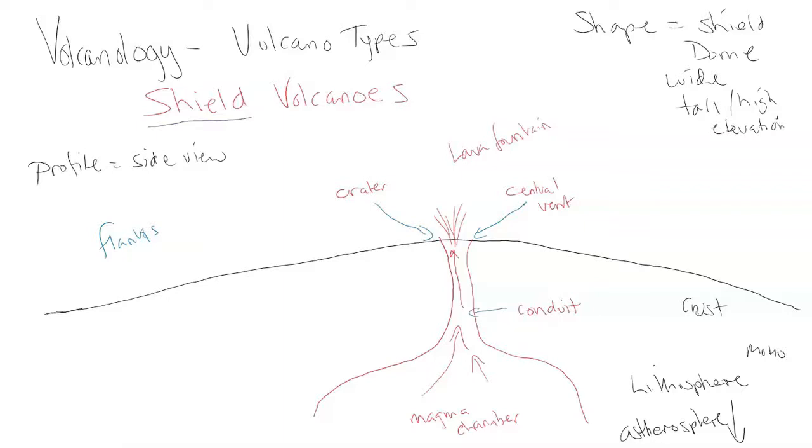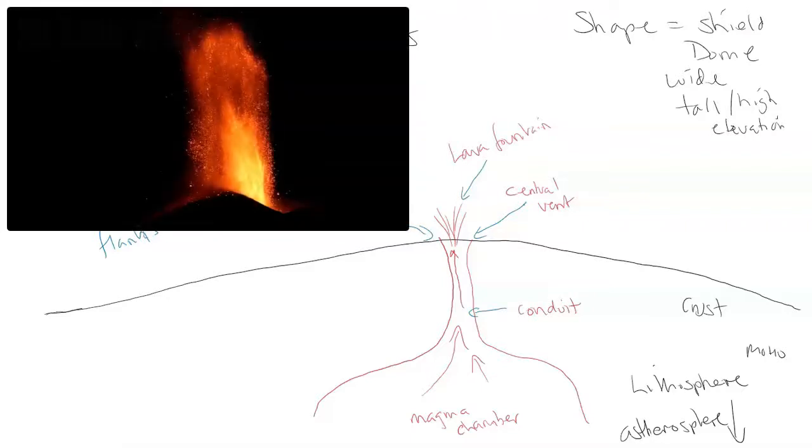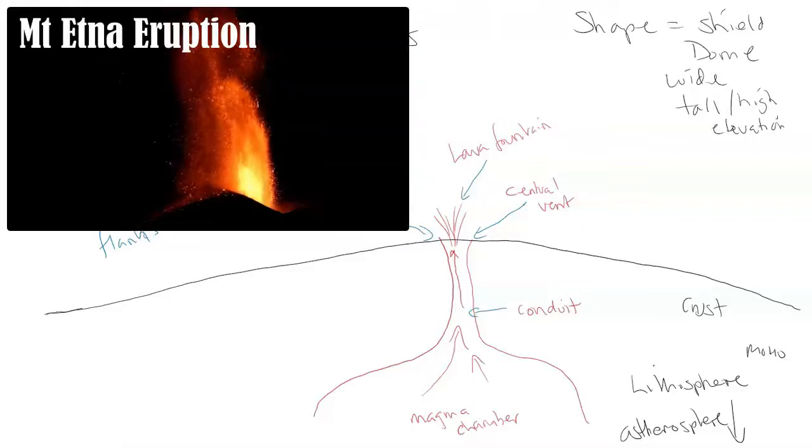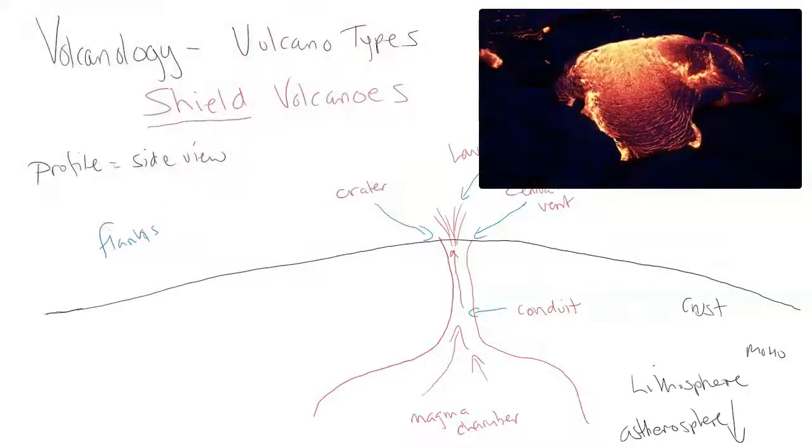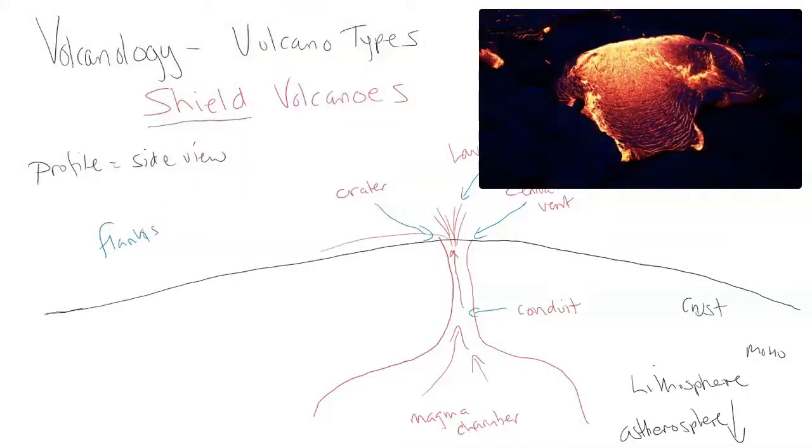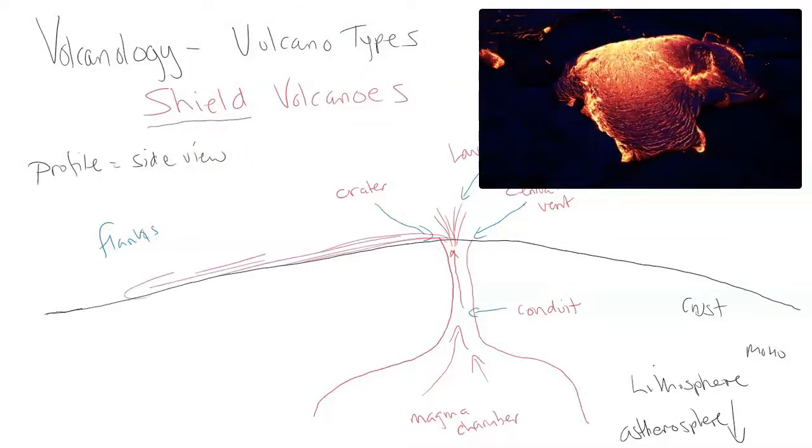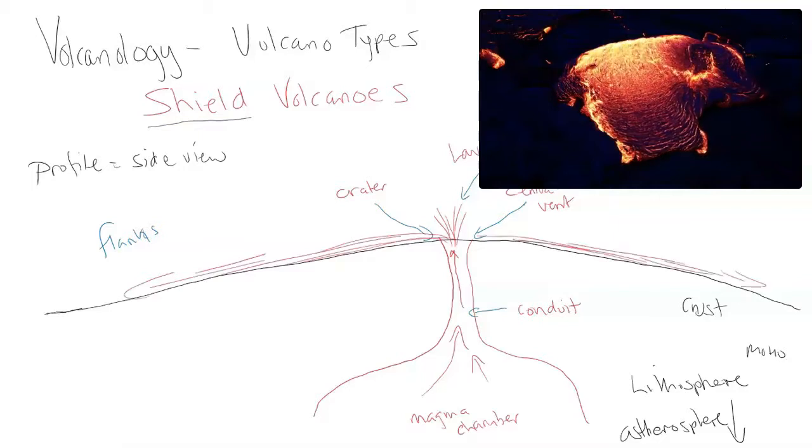Because of the magma being very basaltic, very runny, very hot, it can create lava fountains on occasion where the amount of energy and pressure spits out the lava in high fountains that are spectacular to view. Recently Mount Etna was doing that. Because this is very basaltic lava, it comes out very runny and very fast and it starts to flow in a very long distance, long distance flow.